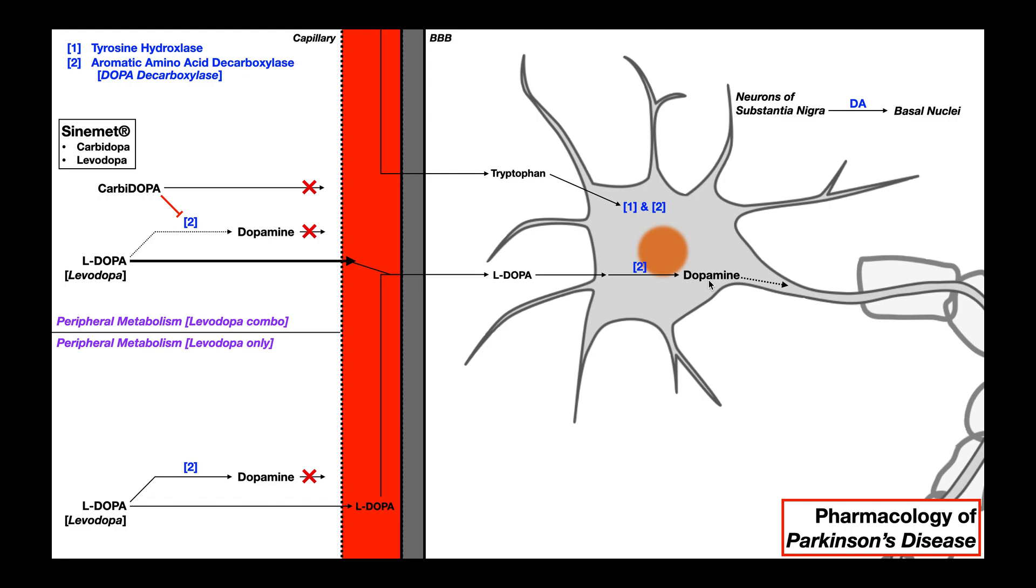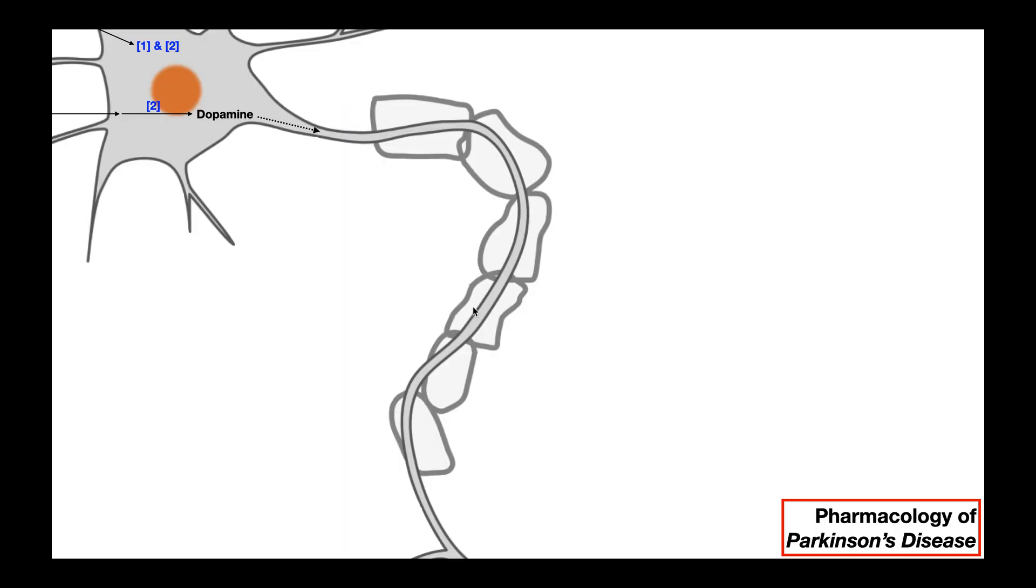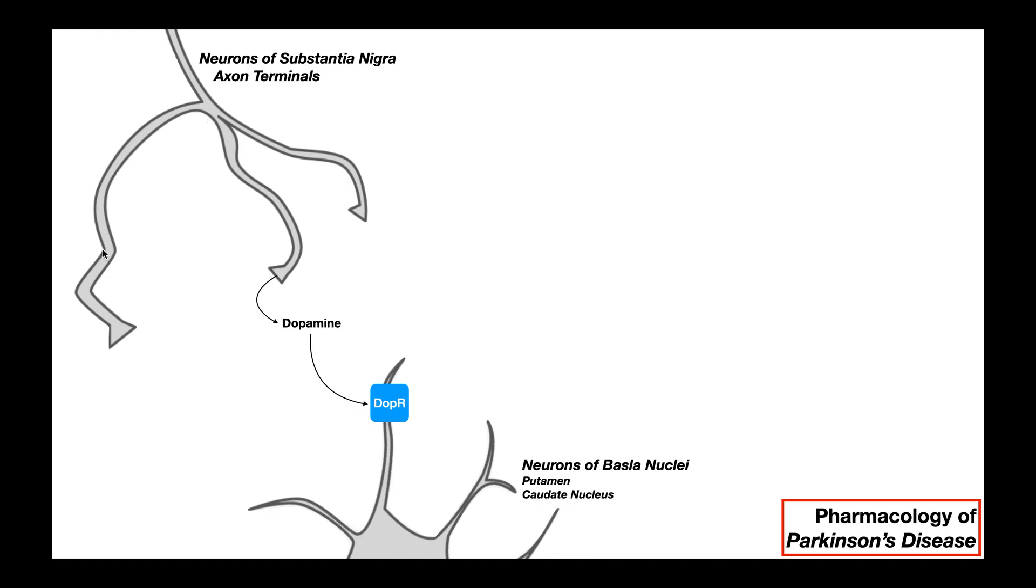Now, any dopamine that's made by these substantia nigra cells is packaged into vesicles and sent along the course of the axon all the way down to the axon terminals of these neurons. At this point, hopefully we understand the events occurring at the synapse. But again, under electrical stimulation, dopamine will be released from a vesicle into the synapse by exocytosis. Here's our dopamine. It travels across the synapse and binds to its corresponding dopamine receptor on the postsynaptic cell membrane. And this cell is a neuron belonging to the basal nuclei.